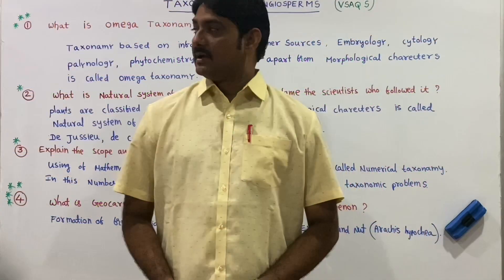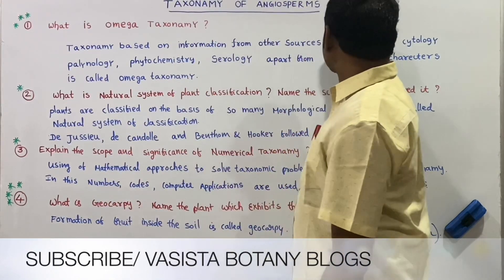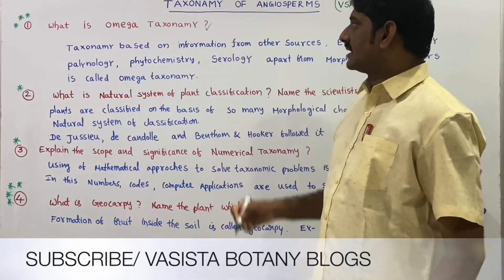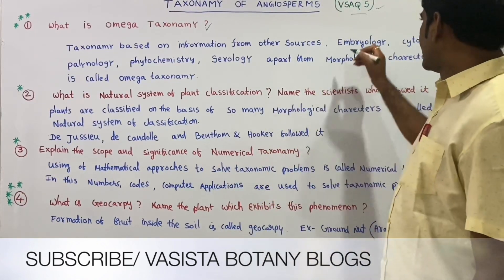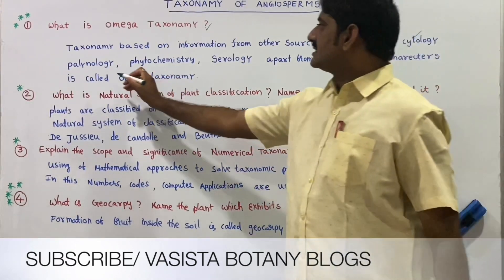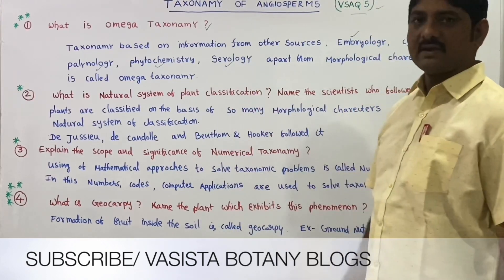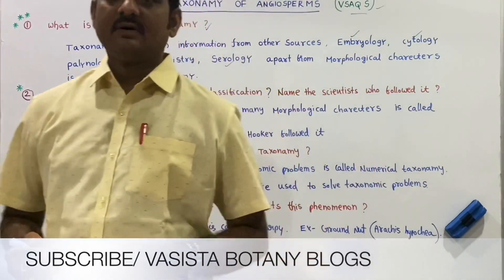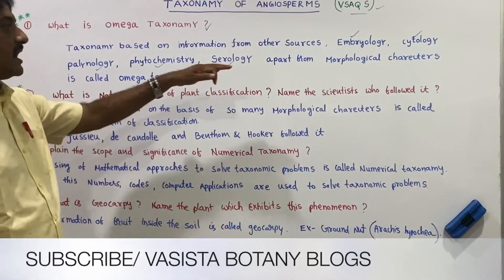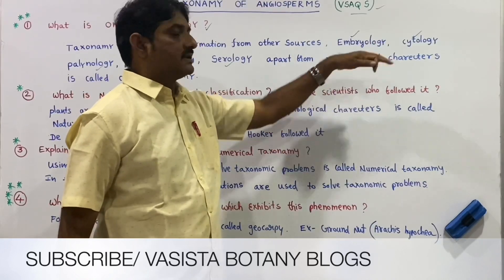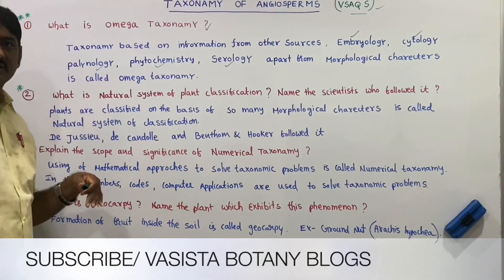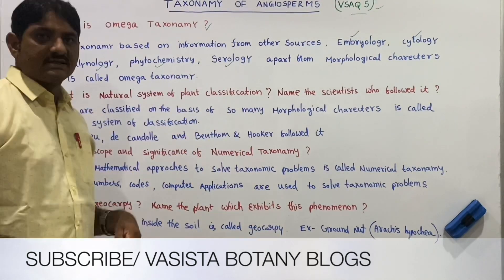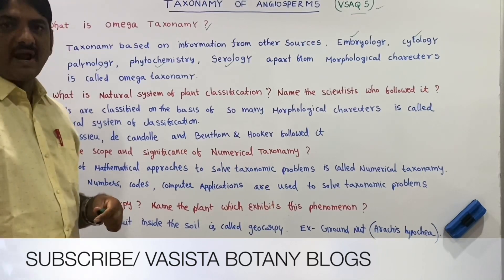What is omega taxonomy? Omega taxonomy means taxonomy based on embryology, cytology, phytochemistry, and serology, apart from morphological characters. Apart from morphological characters, information from other branches such as embryology, cytology, paleology (study of pollen grains), and phytochemical data are also used as the basis. Serology — the study of serum — is also used to classify plants.